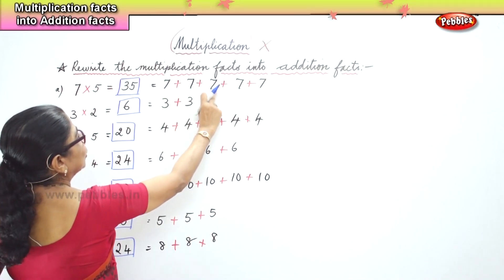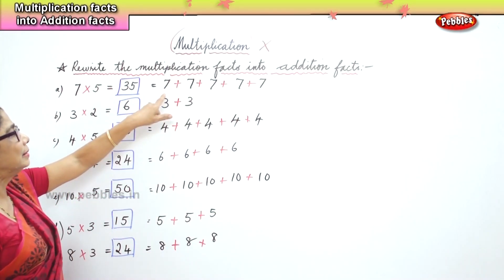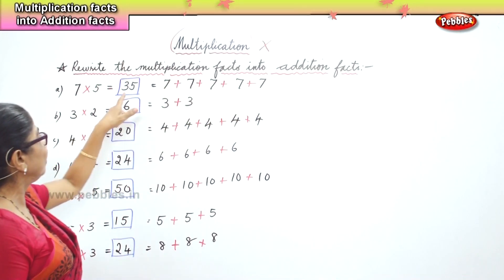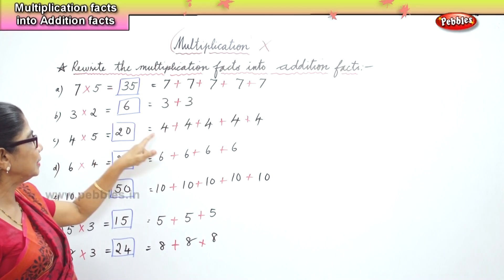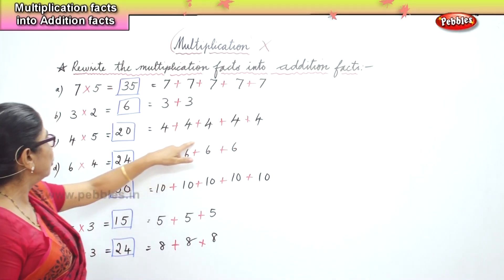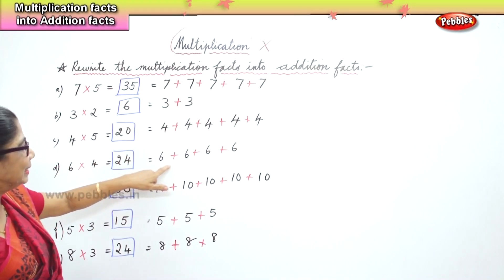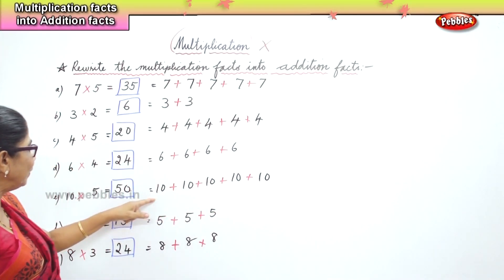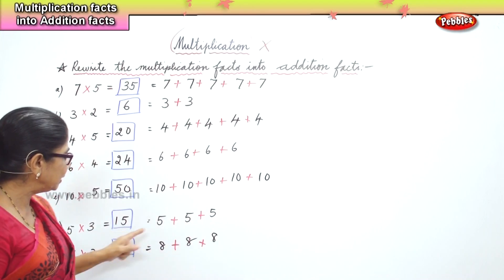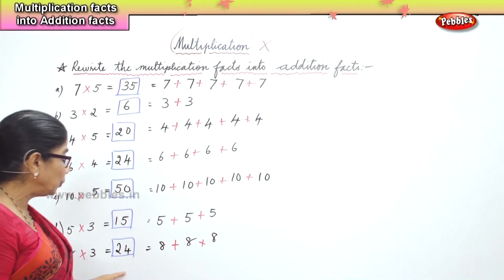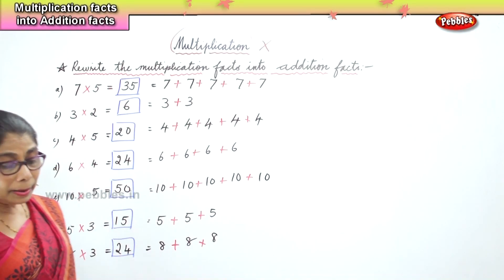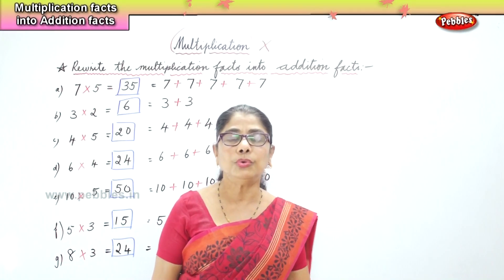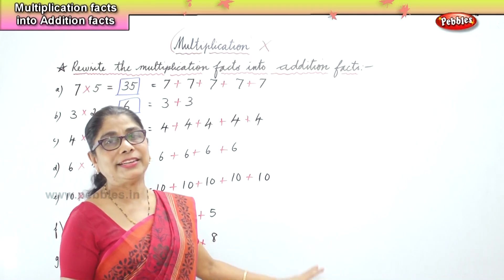One, two, three, four, five — seven fives are thirty-five. Three threes are six. Four fives are twenty. Six fours are twenty-four. Ten fives are fifty. Five threes are fifteen. Eight threes are twenty-four. Given the multiplication fact, we learned how to write the addition facts today.